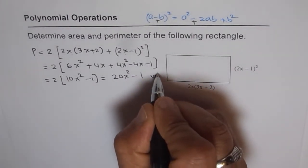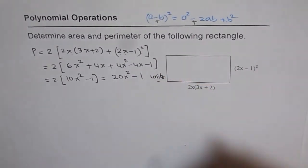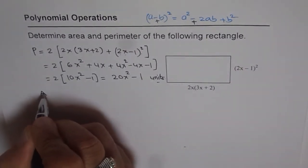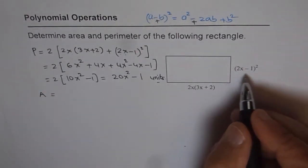And units, whatever units it is. So that is the perimeter. To find the area, we need to multiply these two. So we get